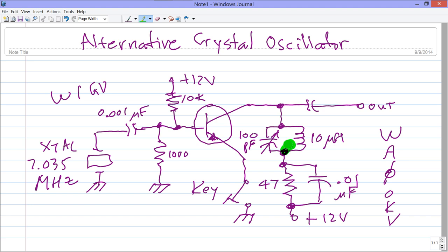You tune this one here to 7.035 megahertz and you try to erase that green blob. 7.035 megahertz. The idea was that the existence of high gain in this transistor.